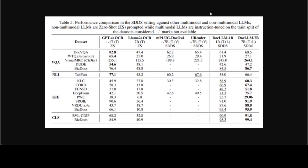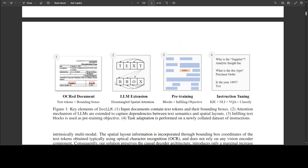This model's architecture is quite interesting. Looking at the paper, you can see the four key elements of the Doc LLM model. First, OCR document — you input documents which contain text tokens and their bounding boxes. Second, the attention mechanism of LLMs is extended to capture dependencies between text semantic and spatial layouts. Third, in pre-training, infilling text blocks is used as the pre-training objective. Fourth, task adaptation is performed on a newly collated dataset of instructions.